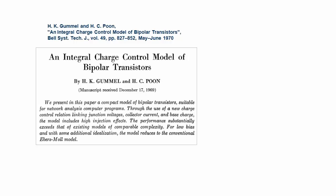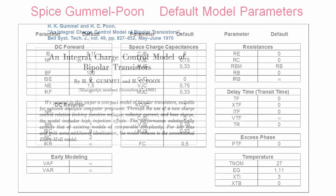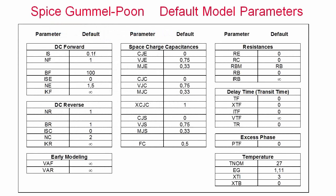The Gummel-Poon model has been introduced in 1970 and was implemented into the circuit simulator SPICE developed by the University of California in Berkeley soon after. It is still widely used today for applications where self-heating and avalanche effects can be ignored. A nice feature of the model is that even with only nine main parameters known, we get already a reasonable first-order fit for DC and S-parameters.